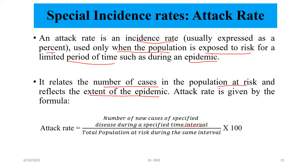Attack rate is given by the formula: attack rate is equal to the number of new cases of a specified disease during a specified time interval divided by the total population at risk during the same interval, multiplied by any constant value — 100, 1000, and so on.